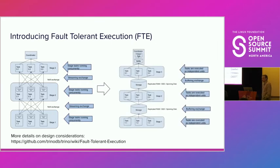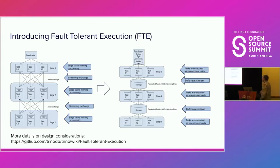With the streaming model, the entire query is required to execute as a single unit, preventing us from applying more advanced scheduling techniques. After careful consideration, we decided to remove this limitation. The idea is to introduce an exchange buffer in between stages. This allows each task to be run independently. This buffer is fully pluggable and abstract from the engine's point of view, so there is some buffer now between stages that allows task scheduling as atomic independent units — no longer necessary to schedule the whole query as a single thing.